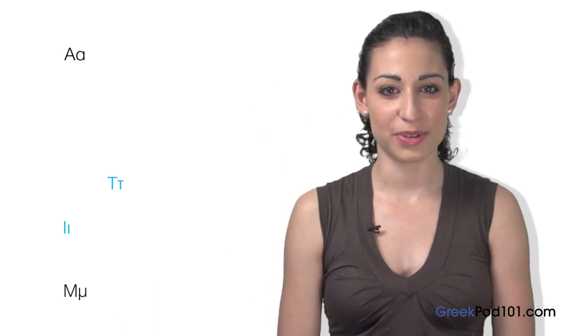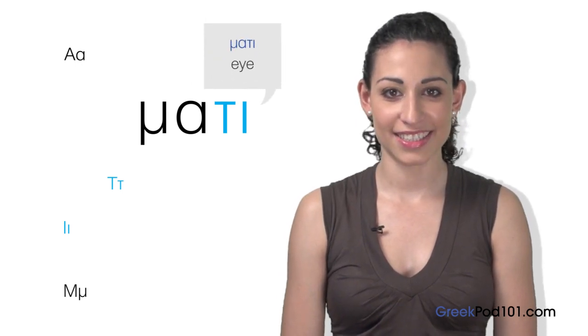Since these were super easy, let's try something using all four letters we know. Do you remember the first two? They were Alfa and Mi, right? Let's say them once again. And if we put these two together with Taf and Yota, what do we have? Máti, which means eye. Easy, huh?